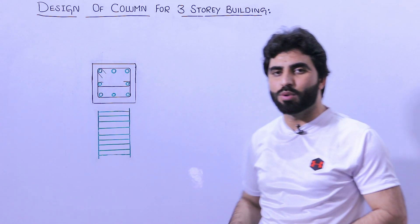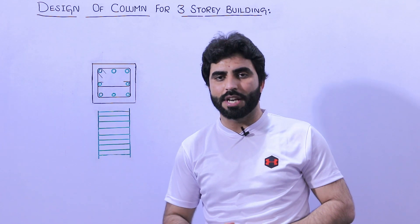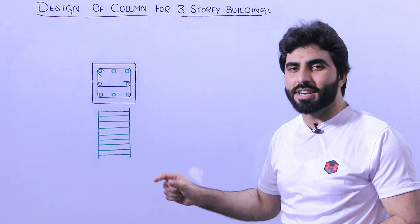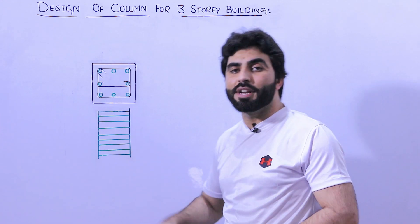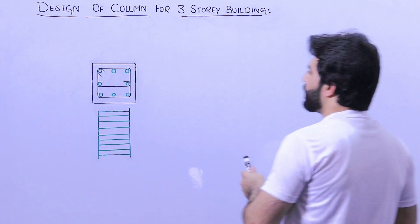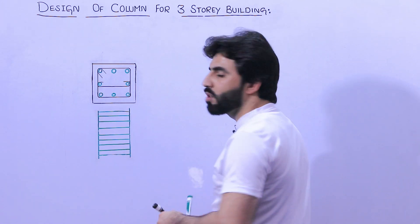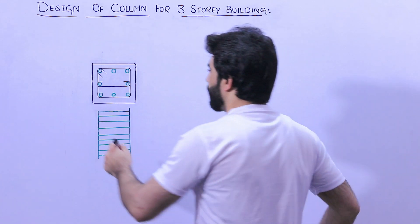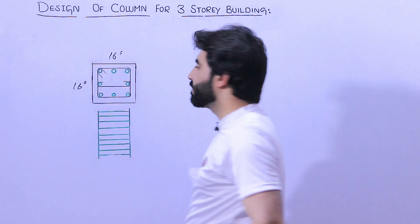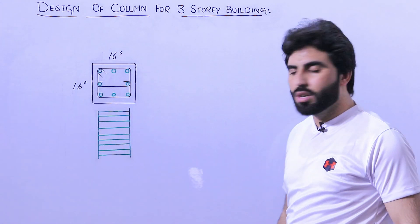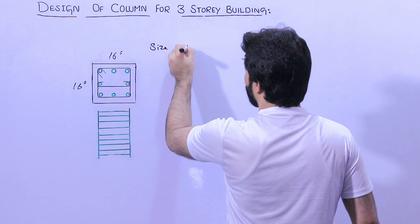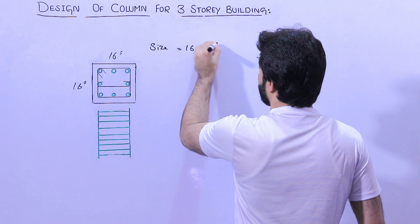This design I did by myself, so let me guide you practically what should be the size of column and its steel reinforcement for three-story commercial building. The size of the column was 16 inches by 16 inches. This is the size of the column we have here, 16 inches by 16 inches.